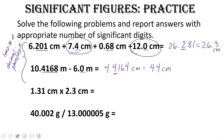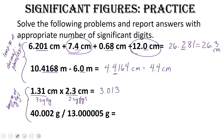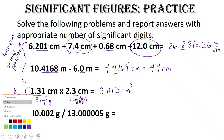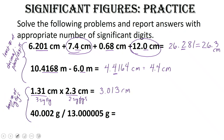Let's look at multiplication and division. For our first problem, we've got three sig figs in the first measurement and two sig figs in the second measurement. When we put this into the calculator, we get 3.013 centimeters squared — because we multiplied centimeters by itself. But how many sig figs do we have? This number has two sig figs and this number has three sig figs. Our value can only have the least number of significant figures, so that means we need two sig figs — and our answer is 3.0 centimeters squared.